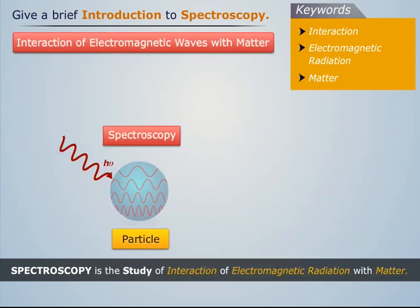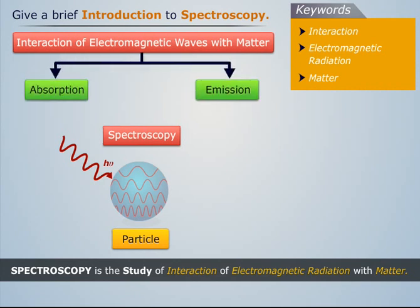There are two ways in which the interaction between electromagnetic radiation and matter can take place: by absorption and by emission.